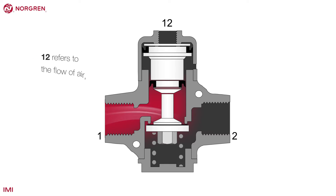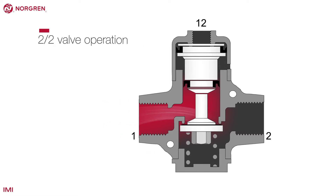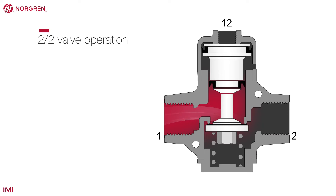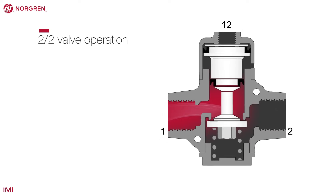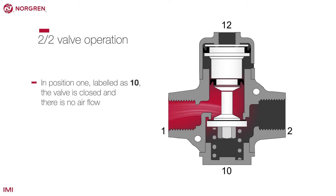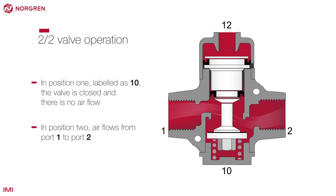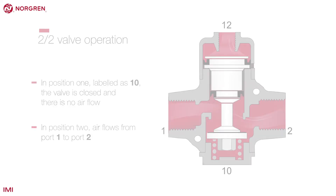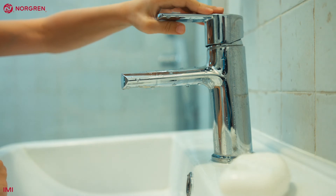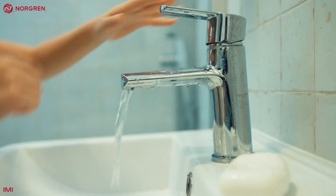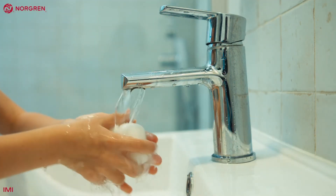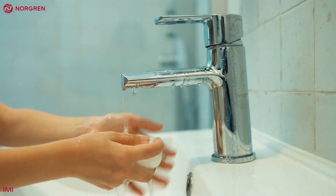This 2-2 valve with 1-2 or 1-0 operation works as follows. In position 1, labelled as 1-0, the valve is closed and there is no airflow. In position 2, air flows from port 1 to port 2. This simple valve is similar to the tap over a wash basin — when it is in one position water flows, in the other it stops.